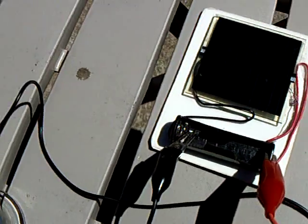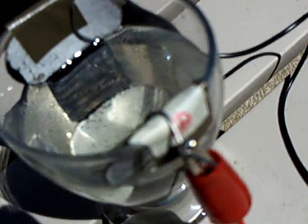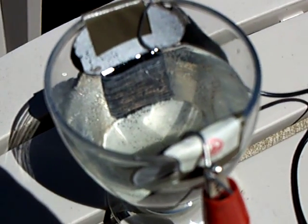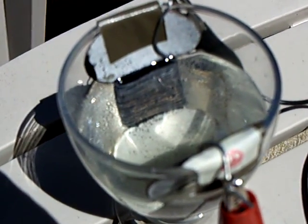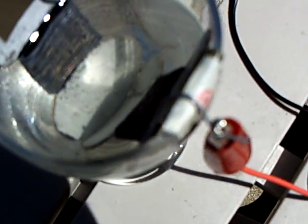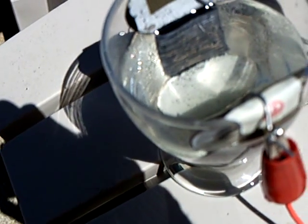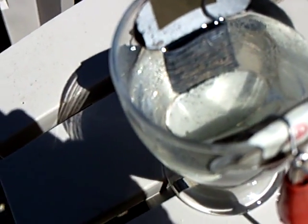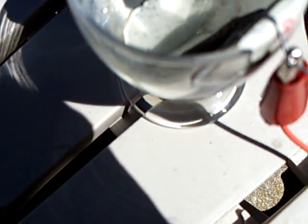Now, if you keep charging this, the negative plate there will start to bubble. And if you continue on, you'll start to bubble on the other plate also. That's hydrogen and oxygen. Hydrogen is coming off the negative, and that's just electrolyzing the water.